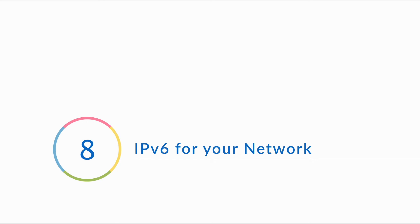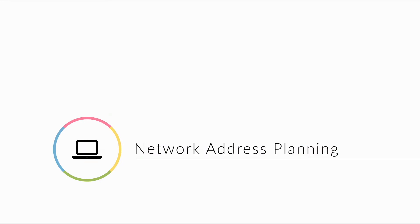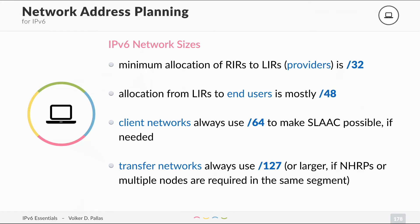Now that you know the basics, let's talk about IPv6 for your network. IPv6 network address planning — that's where you should start. Let's talk about the different network sizes. The minimum allocation of RIRs to LIRs, that's providers, is a slash 32.